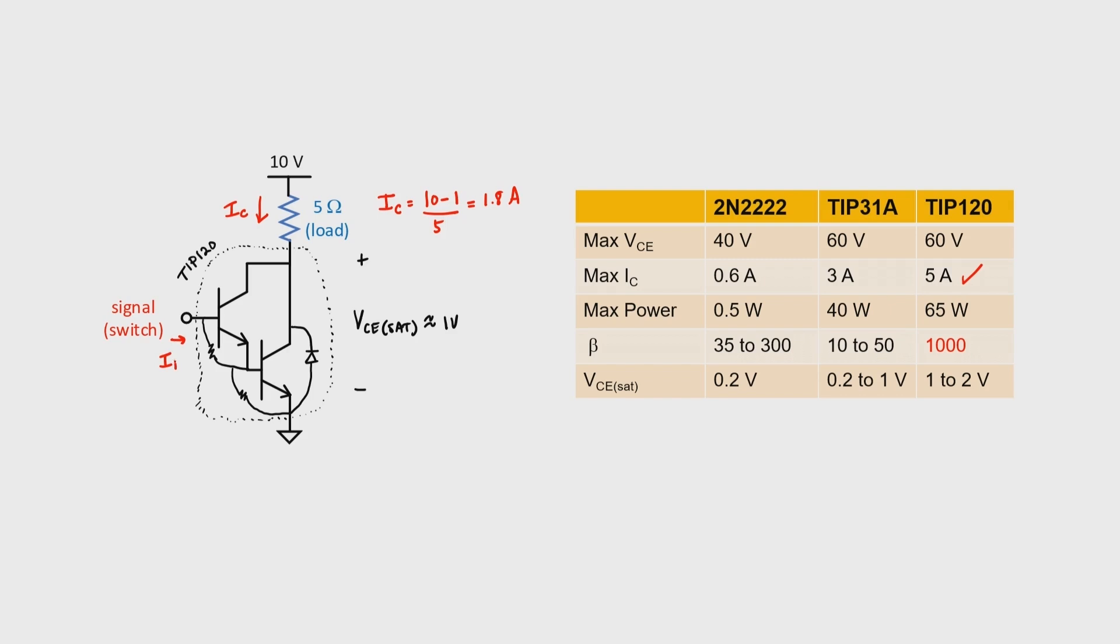How about the required base current? Well, in this case, because our beta is effectively 1000, our signal, switch, or microcontroller would only need to provide 1.8 milliamps of current in order to drive the Darlington pair. Problem solved.